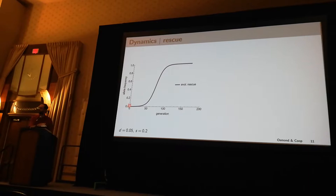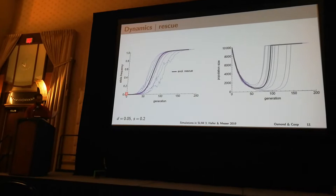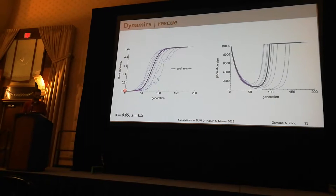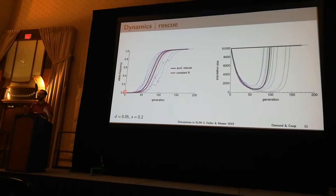We can use this model to predict allele frequency dynamics over time, as well as population size dynamics over time. And we can overlay simulations using SLiM3 and see that we're doing a good job in capturing mean dynamics. We can also compare our rescue case to the case of constant population size and see that when we condition on rescue, these sweeps are expected to occur a little earlier and a little faster.